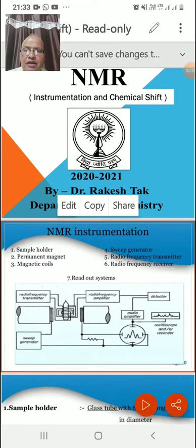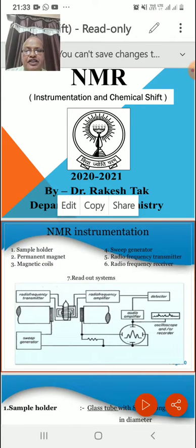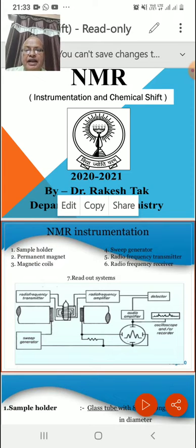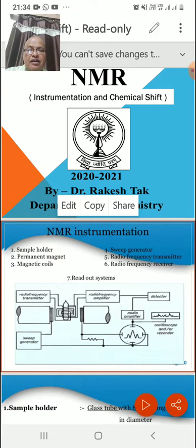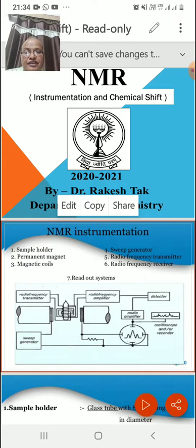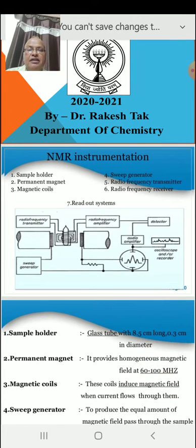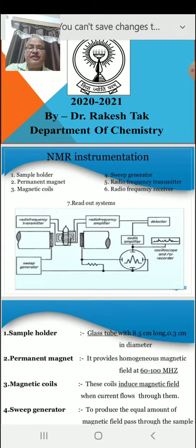NMR instrumentation has six or seven parts: the sample holder, the permanent magnet, magnetic coils, sweep generator, radio frequency transmitter, radio frequency receiver, and the readout system. The instrument is composed of these seven things.